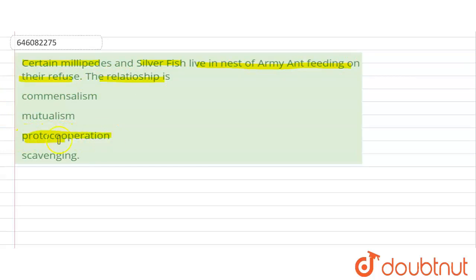Proto-cooperation. This is called as proto-cooperation, in which one or the other animals or organisms are living together and they live together with the cooperation.